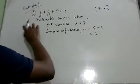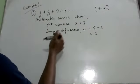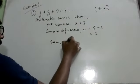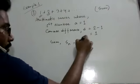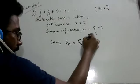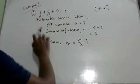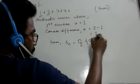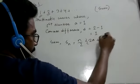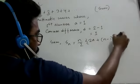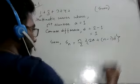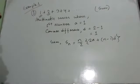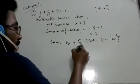So, in the arithmetic series, the sum of n is equal to the formula: n by 2 into 2a plus n minus 1 into d. This is the formula.